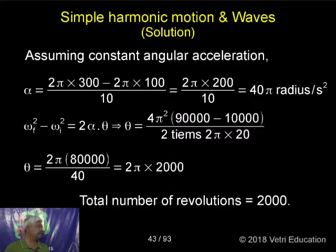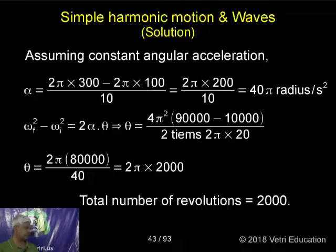Equal to 4 pi square. That is the value. 4 pi square, 90,000 minus 1,000. This is also I have given in the previous class. What is the value? 300 square, 9,000, 90,000. 100 square, 10,000. So that is the value.